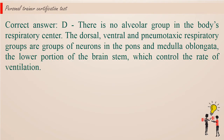Correct answer d. There is no alveolar group in the body's respiratory center. The dorsal, ventral, and pneumotaxic respiratory groups are groups of neurons in the pons and medulla oblongata, the lower portion of the brain stem, which control the rate of ventilation.